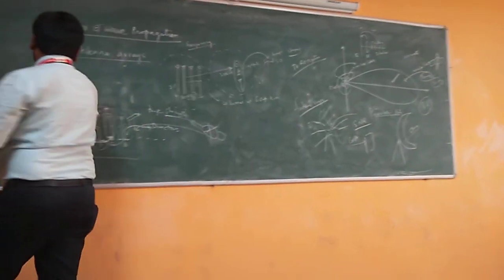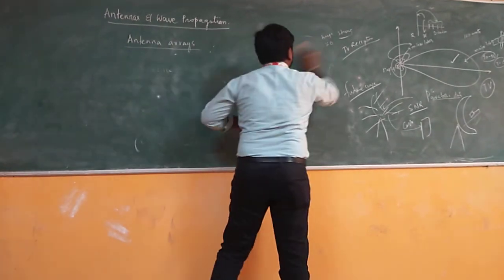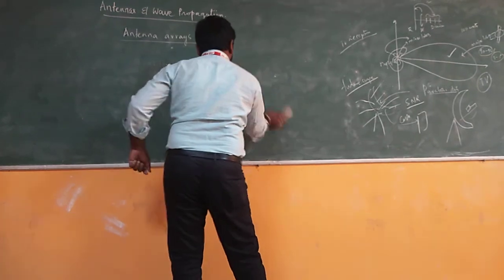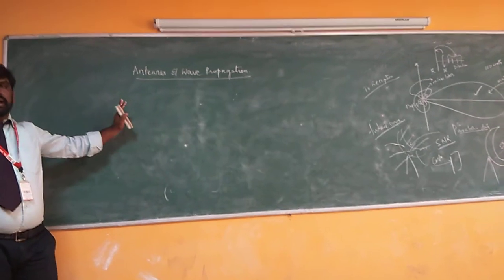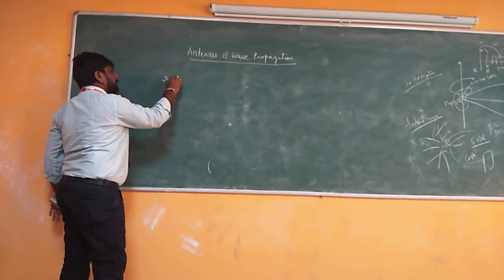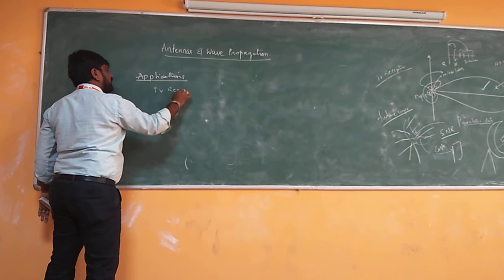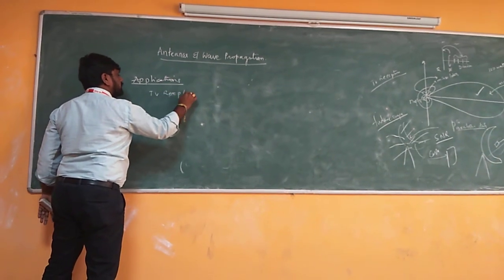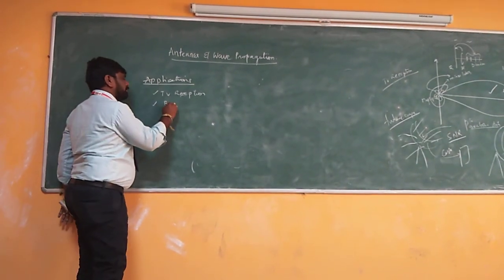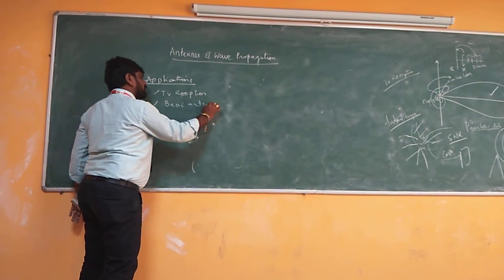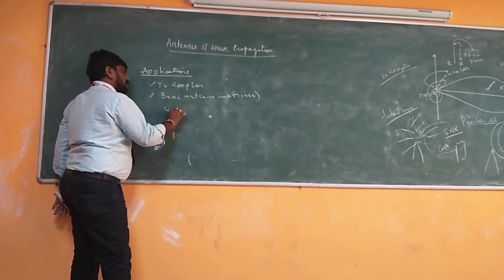The applications of the Yagi-Uda antenna include TV reception signals. The future scope of parabolic dish antennas extends further into MIMO — Multiple Input and Multiple Output antennas. The Yagi-Uda antenna is also used as a basic antenna for MIMO antennas and can similarly be applied in microstrip antennas.